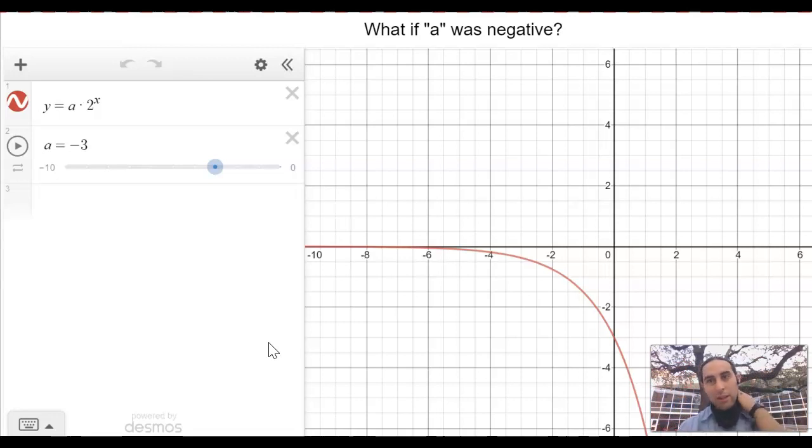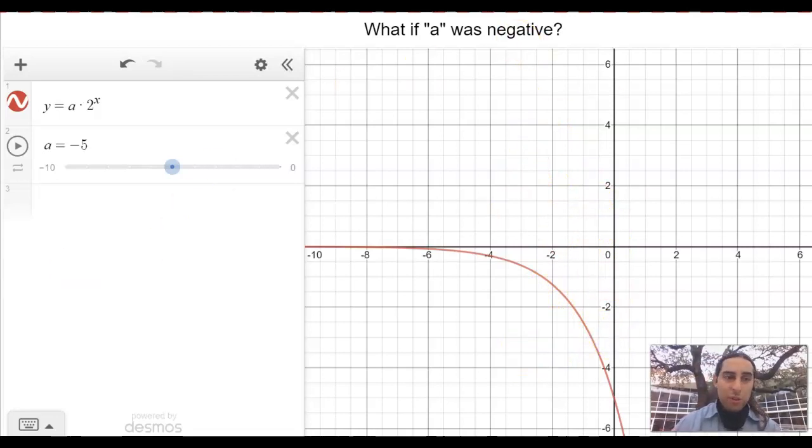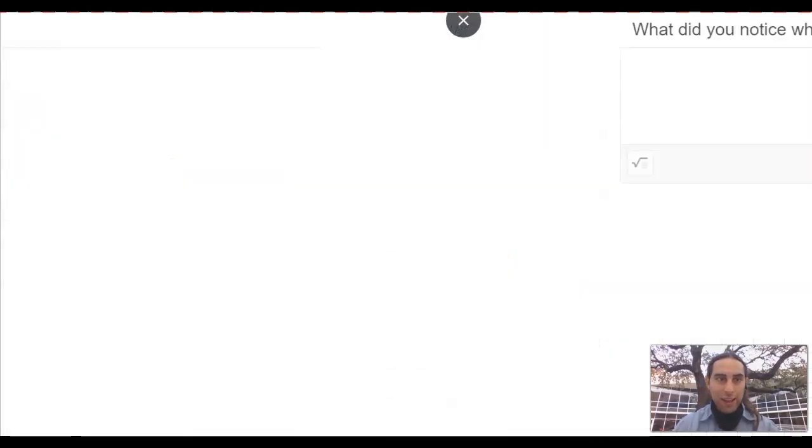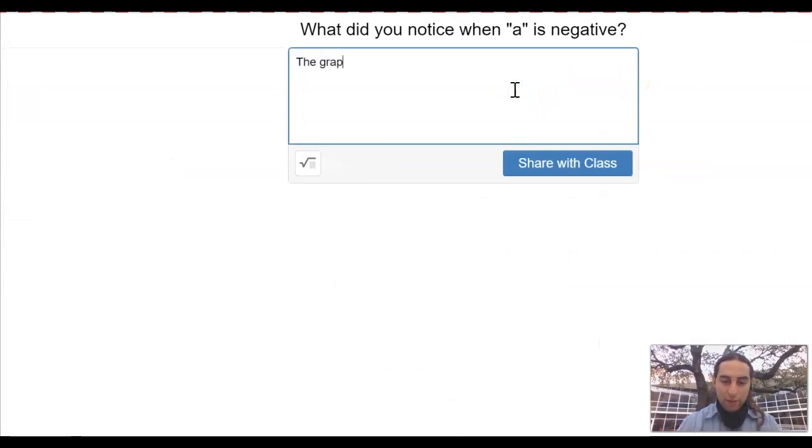All right, so what if a was negative? Well, you see how these are only negative numbers? So instead of being above the graph over here, now we're below the graph. What do you call it when it moves like from here down to here? Kind of does this flipping over thing. What's a math word for flipping over an axis? Starts with an R. It's called a reflection. So it looks like a negative a reflects across the x-axis. The graph reflects across the x-axis.